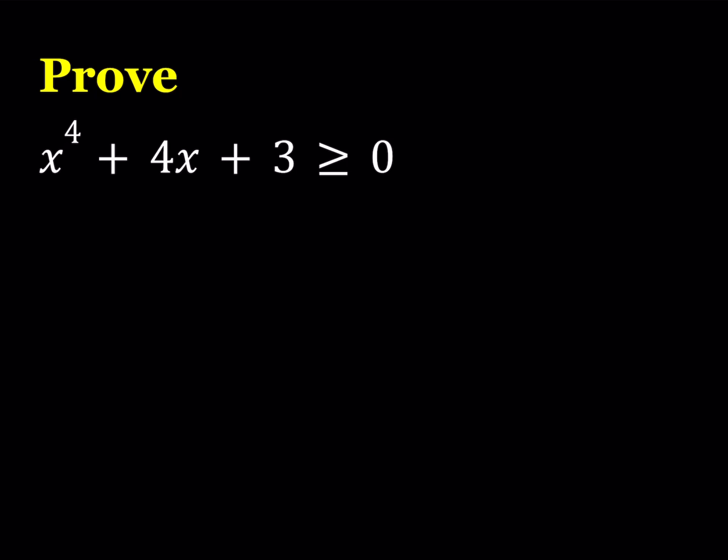But with quartics, things aren't that easy. With a quadratic, you can say the discriminant — b squared minus 4ac — is less than or equal to zero, so it only has one root or no roots. But with the quartic, things aren't that easy, so we're going to look at it from a different perspective. I'd like to present the algebraic approach first. So, first method.